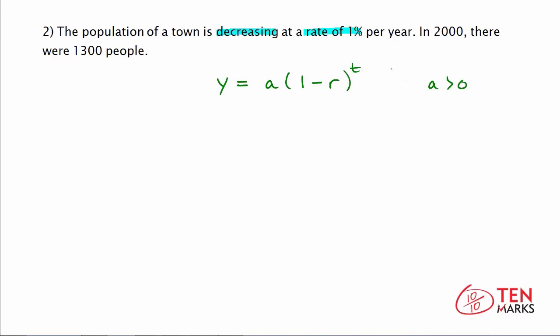We need to start filling in these values. a is the initial or original amount. The original amount corresponds to the population in the year 2000, which was 1,300 people — that's when we're starting this decay function. So our original amount, a, is 1,300. Substitute that in.